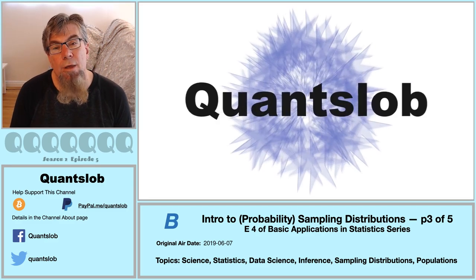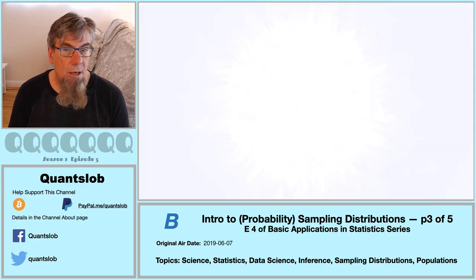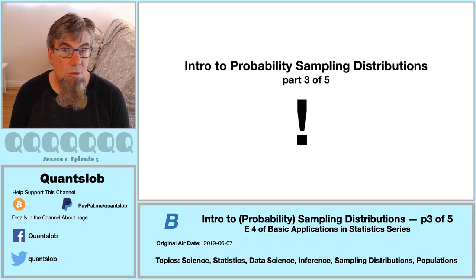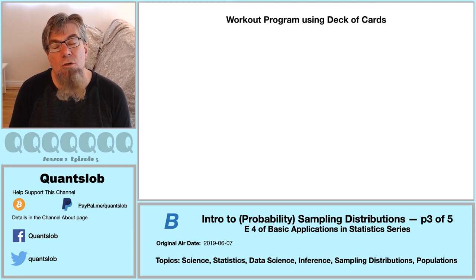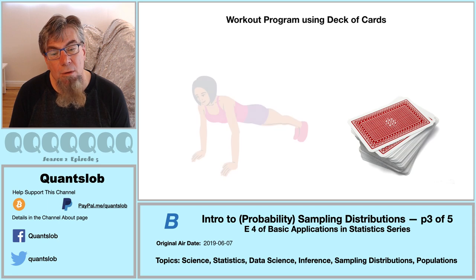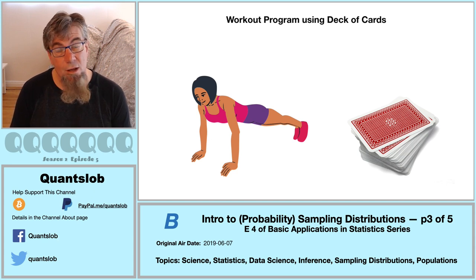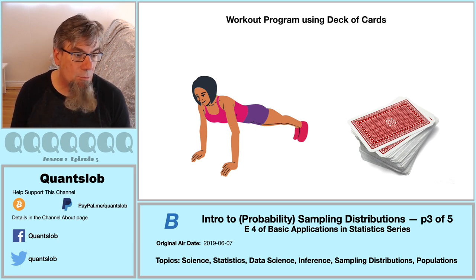Greetings and welcome to yet another installment of QuantSlob. This is fourth in our basic application series — part three in our mini-series on probability sampling distributions. Recall the gym game or workout program from our installment on population parameters titled 'Population Proportions and Averages,' the 13th edition in our foundational series — Lucky 13. Quick recap: this workout program involves a deck of cards. For some exercise, say push-ups, you and your workout partner each take turns doing sets.